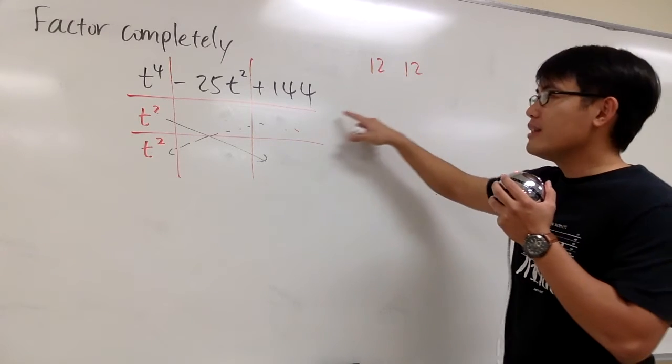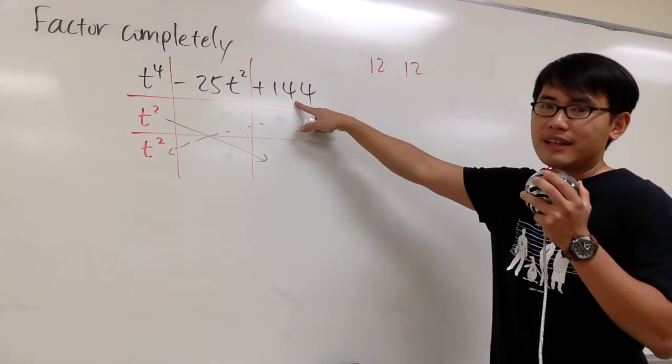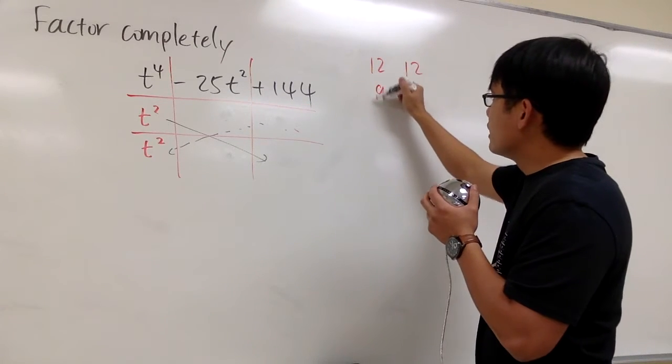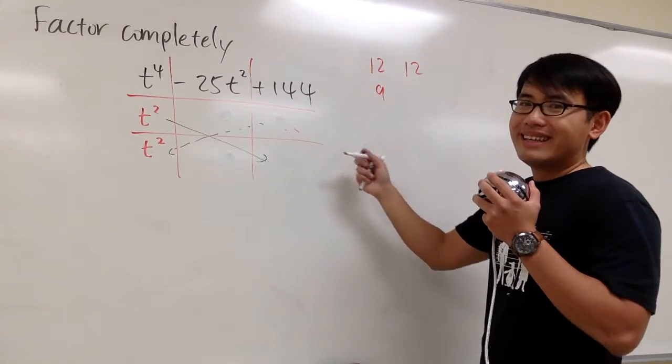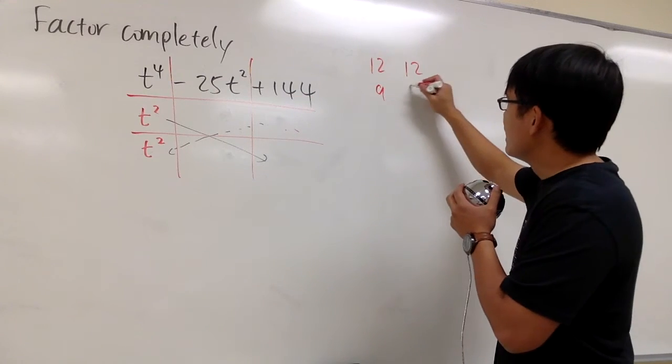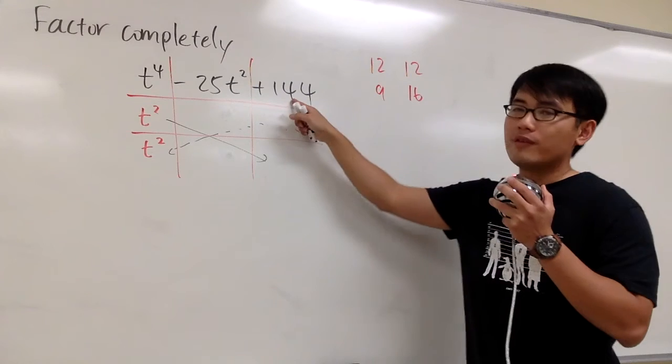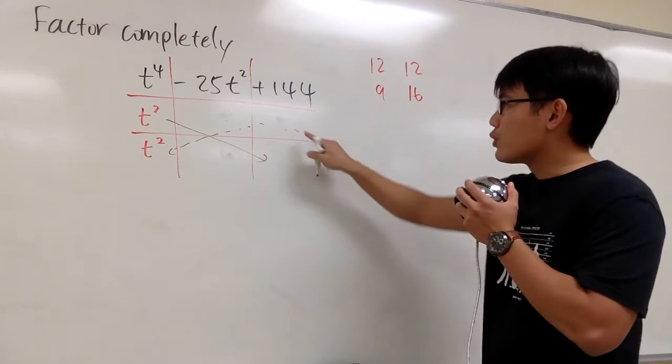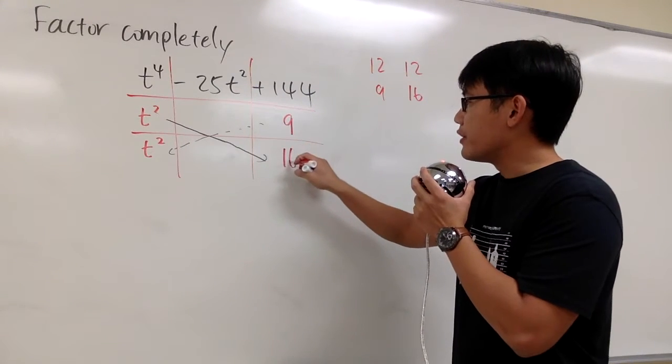10 doesn't go into 144. I will try 9 then. 9 times what will be 144? In fact, it works. 9 times 16 is 144. So I'm going to try to have 9 and 16 right here.